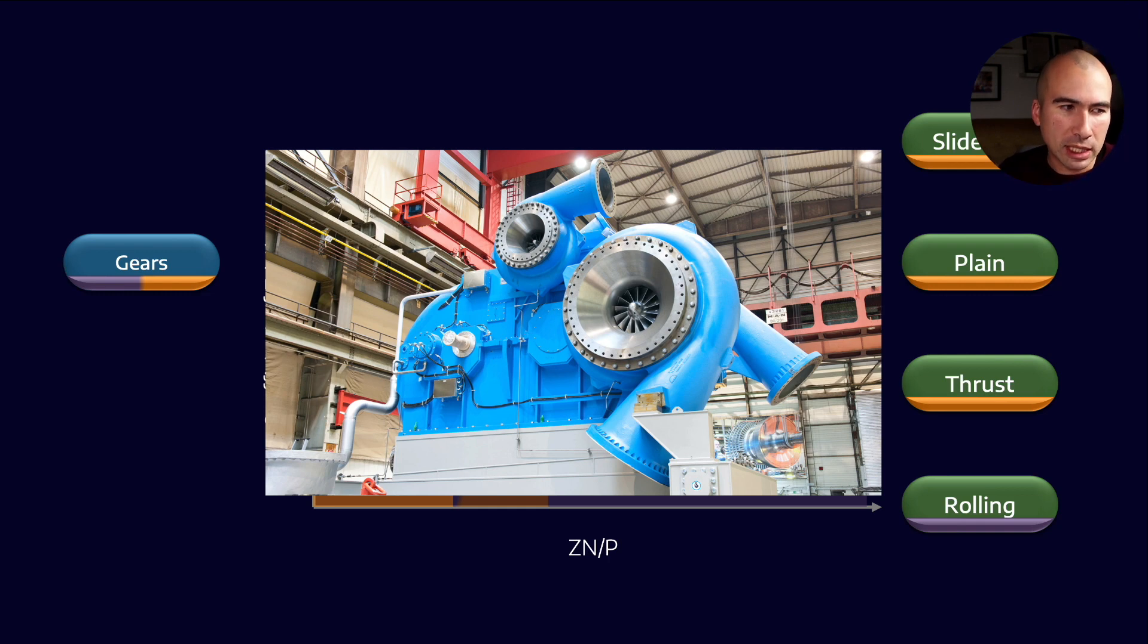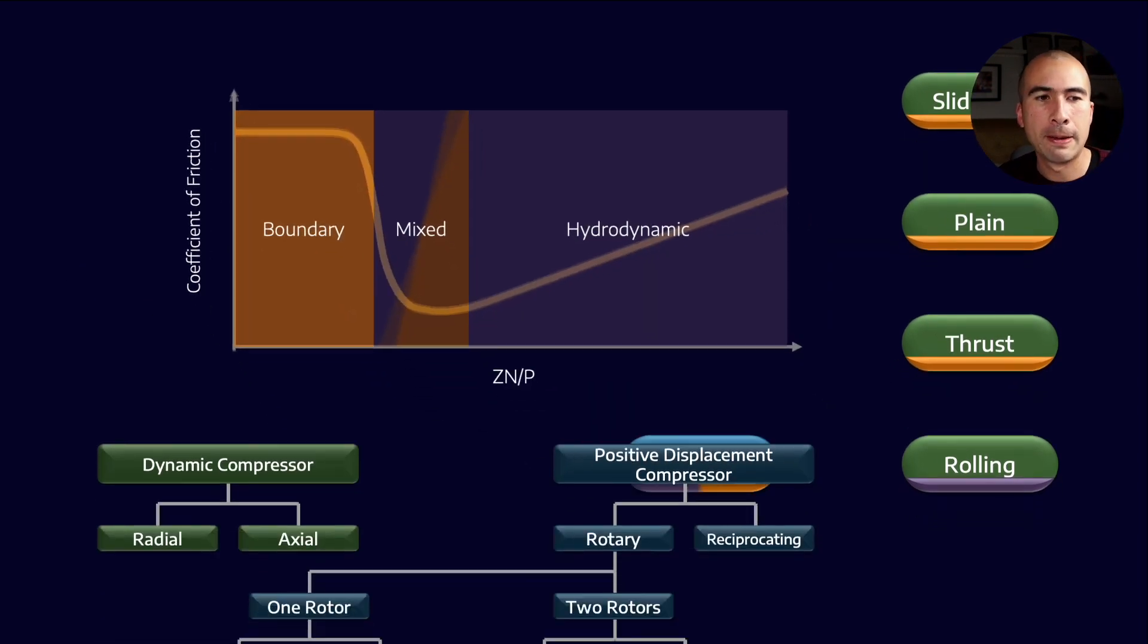The example that I'm showing here, typically it's one drive shaft that is actually rotating all three of the centrifuges, but they might have to operate at different speeds. And so there's an internal gearbox which helps manage the speeds. Now, let's say for example we have slideways, plane bearings, thrust bearings, rolling element bearings, as well as gears.